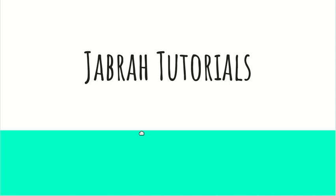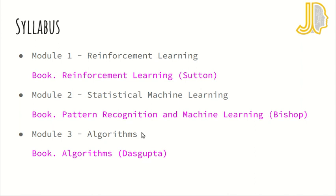We're going to go through three modules essentially — as of now there could be more in the future — but the ones I plan are: reinforcement learning, statistical machine learning, and algorithms. I chose reinforcement learning because it's a very exciting field, more of a personal preference. I would advise you to at least go through this module.